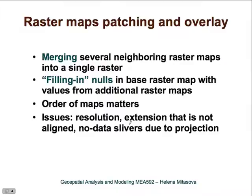Let's now look at another basic operation: patching and overlay. Patching is used to merge several neighboring raster maps. Many raster maps, especially larger ones, come in tiles, and to create a single map we need to patch these tiles. We can also combine different raster maps by filling nulls in a base map with values from a different map.